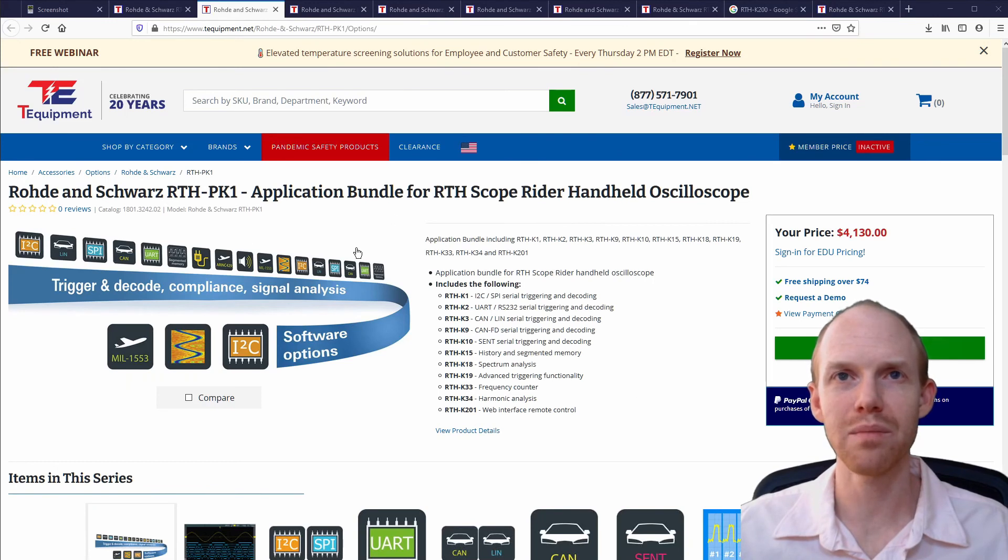This here is one big bundle they sell. It's more expensive than the base model of the scope, $4,000 extra dollars. But that has all of these main options here. It's not all of the options, so you'd still have to buy, if you wanted the full complete package, you'd still have to buy the wireless option. This has the remote web interface, but not the wireless. And it has all these packages for digital stuff, but it doesn't have the digital mixed signal package with the actual connector you need for the digital port.